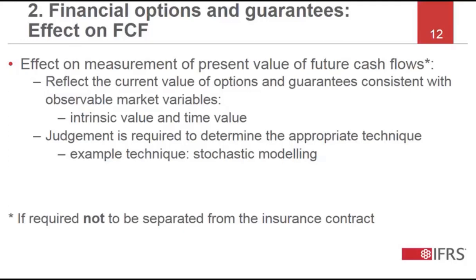An entity must consider the effect of the financial options and guarantees not separated from an insurance contract when measuring the fulfilment cash flows. The measurement approach in IFRS 17 will result in the present value of future cash flows reflecting the current value of options and guarantees consistent with observable market variables. The expected present value of future cash flows is an estimate based on all possible outcomes about cash flows, and IFRS 17 requires the measurement to include the effect of financial risk, either in the estimates of future cash flows or in the discount rate. The measurement approach therefore incorporates both the intrinsic value and the time value of embedded options and guarantees.